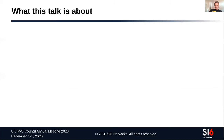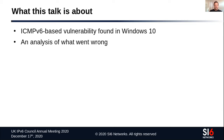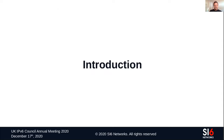So what is this presentation about? I'll be discussing a vulnerability based on ICMPv6 that has been found in Windows 10. I'll try to get into the details of this vulnerability, and then provide a simple analysis of what went wrong — whether this vulnerability could have been prevented or not. Before getting into the vulnerability itself, I'd like to briefly discuss a few topics that provide the context.